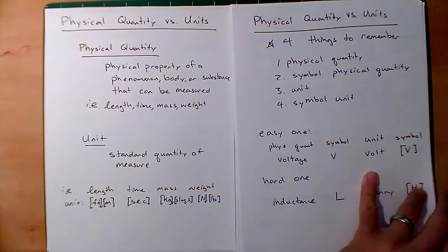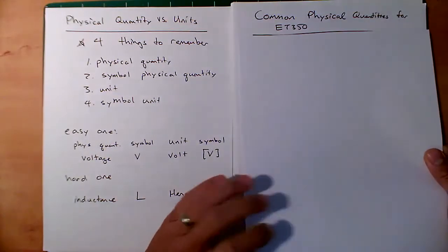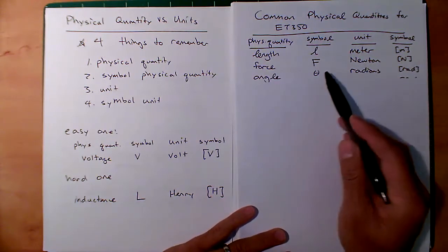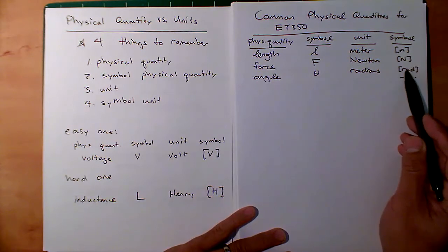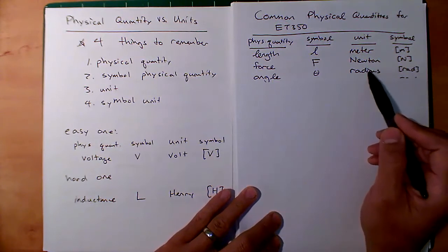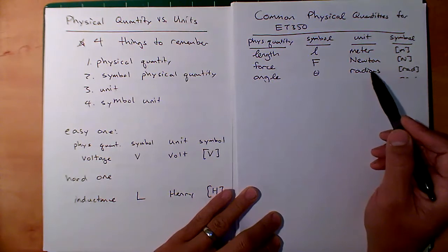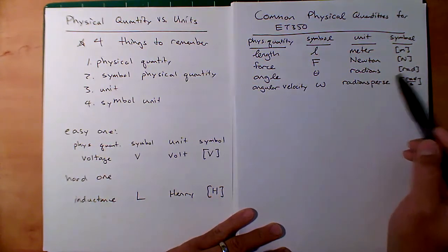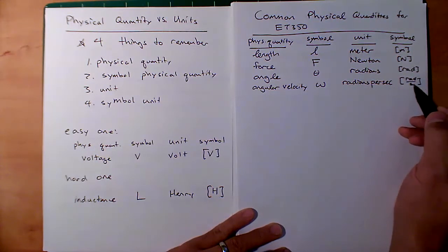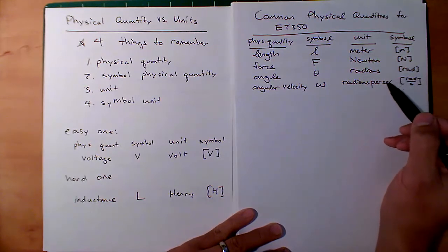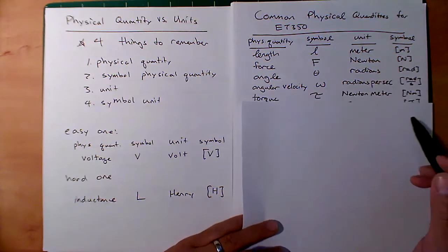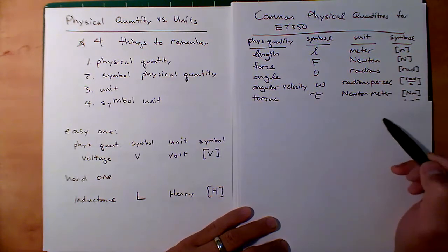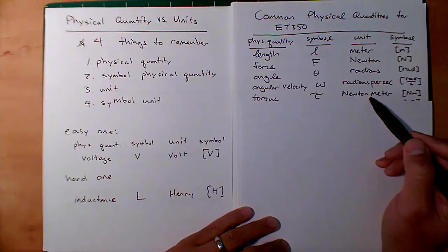I'm going to list out physical quantities that will be useful for ET350. We have the basics: length, force in newtons, angle theta in radians (or rads). Radians are very important for our measurements because they can be directly used to calculate energy and power. Angular velocity symbol is omega — radians per second, or rad/s — but we'll also use RPM and you'll need to know how to convert between RPM and radians per second. Torque uses the Greek tau symbol and is measured in Newton-meters (Nm). Note that a Newton-meter is actually the same unit as energy, or joule.